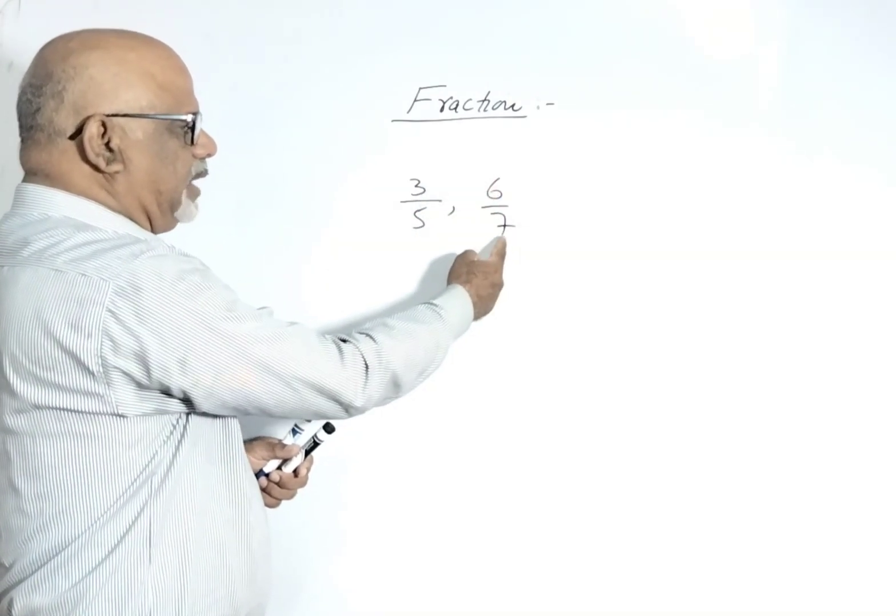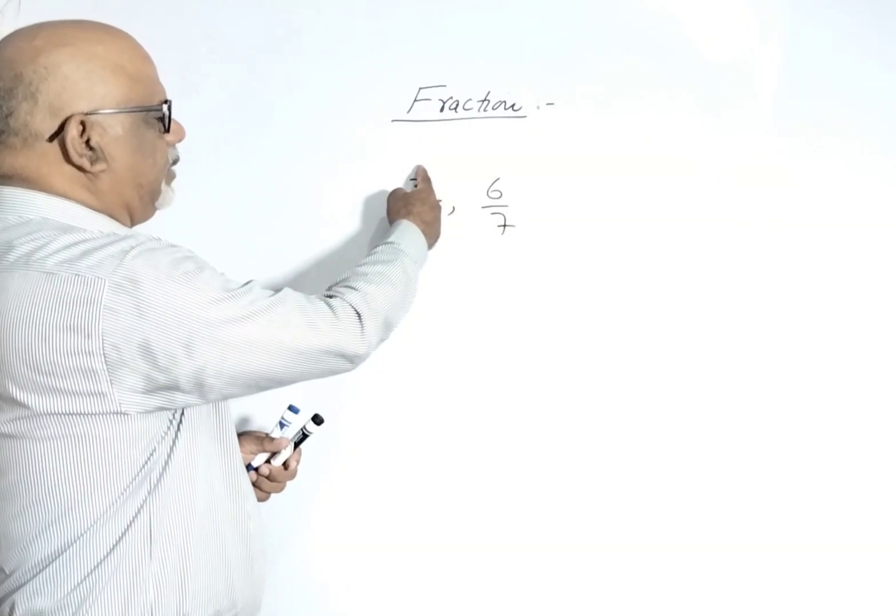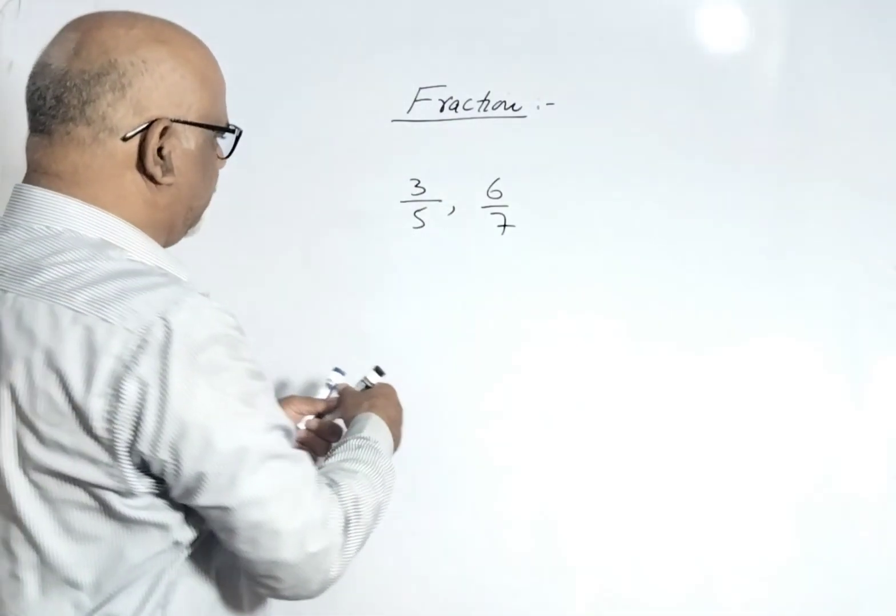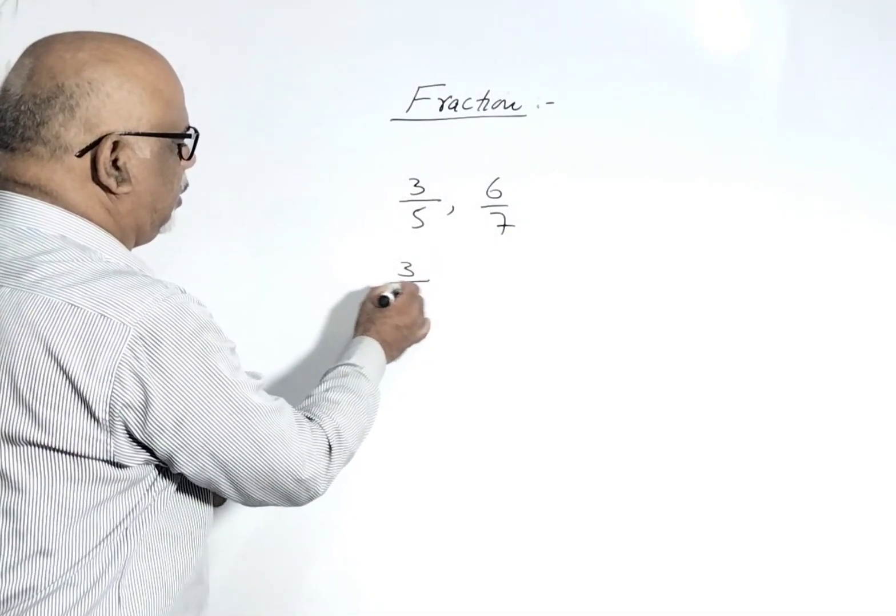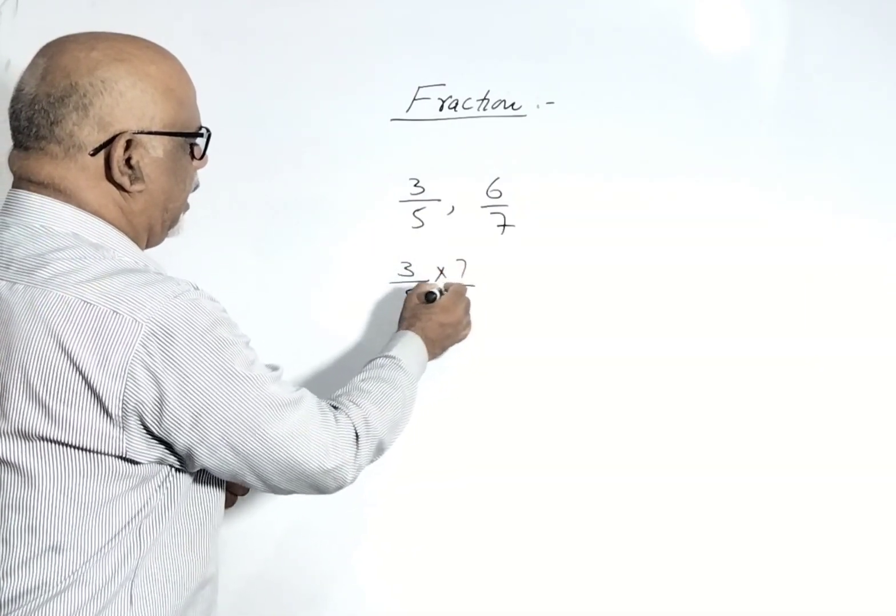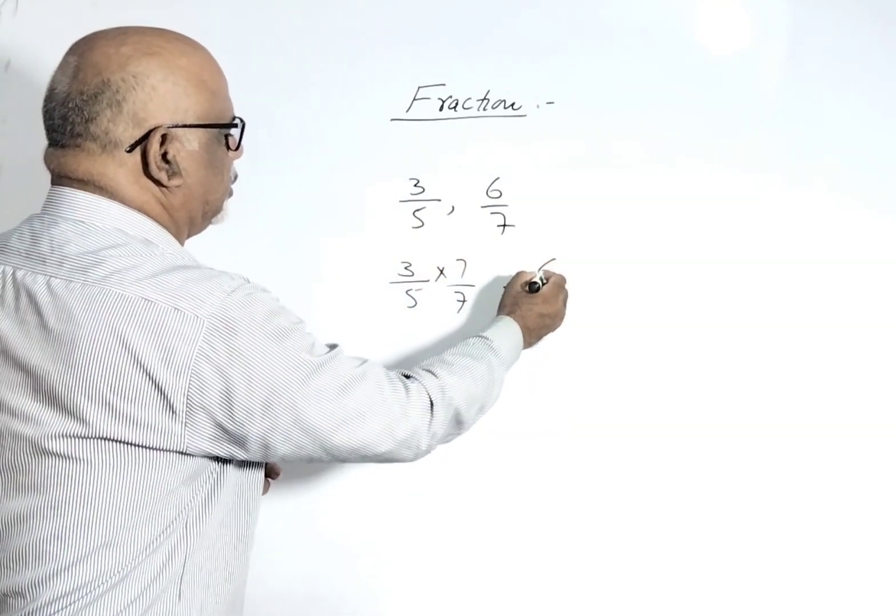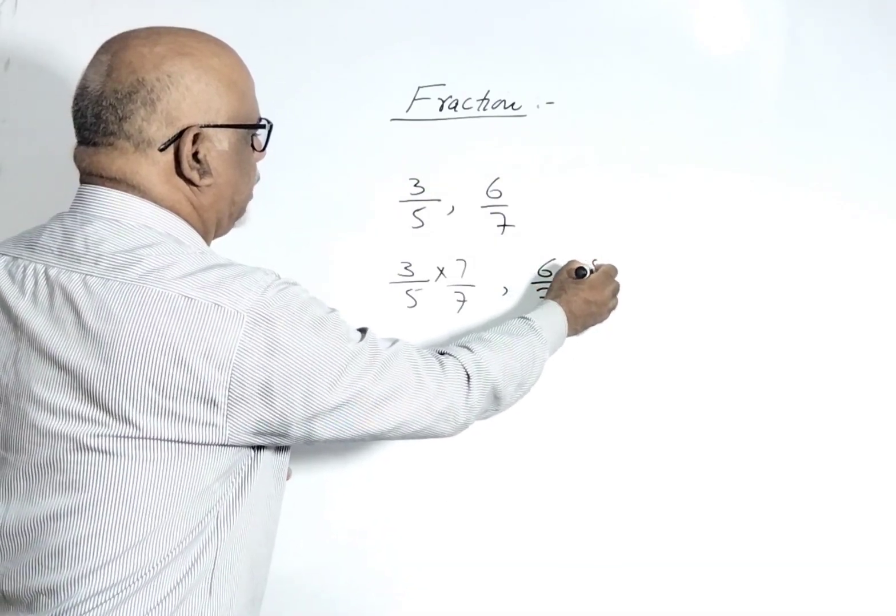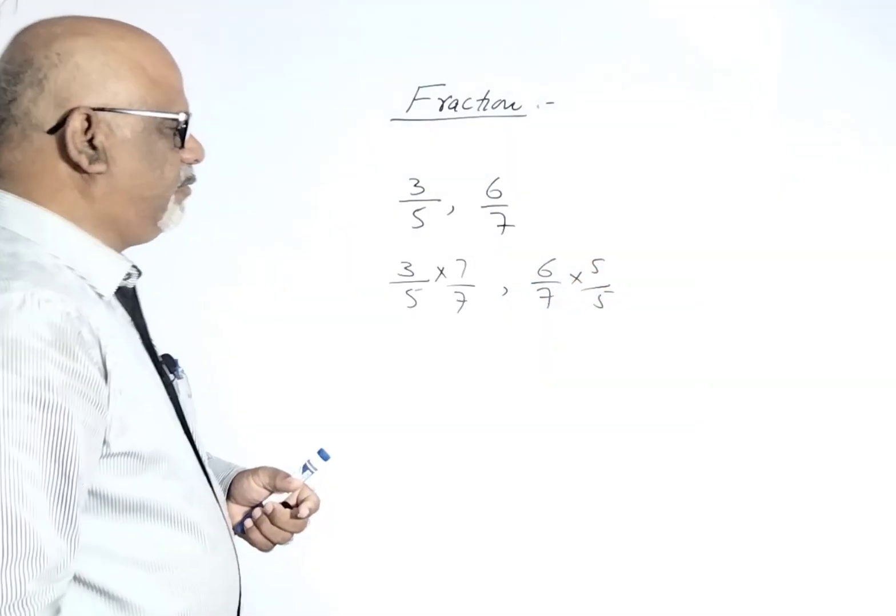And here the second fraction's denominator is 7, so we have to multiply this numerator with the denominator. So here this is 3 upon 5 multiplied and divided by 7. So this is 6 upon 7 multiplied by 5 and divided by 5.